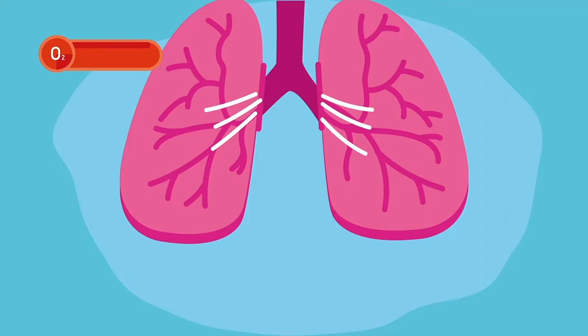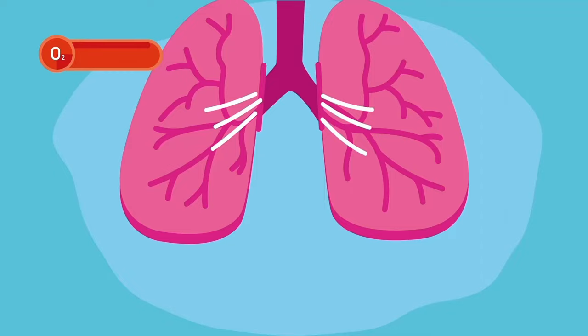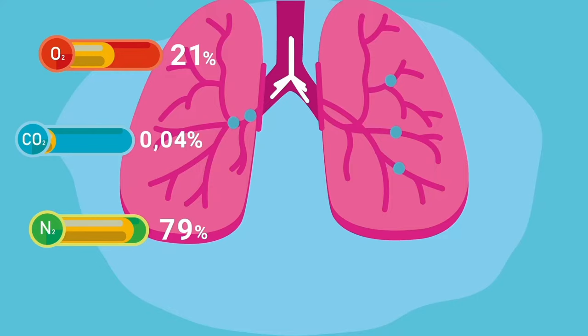The amount of oxygen during inspiration is 21%. Carbon dioxide, 0.1%. Nitrogen, 79%. Moisture and dust in variable quantities. And the temperature of the air is around 20 degrees Celsius.